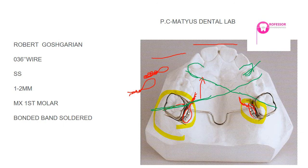According to Ricketts, if you draw a line from the cuspal tip of the distobuccal cusp and the mesiopalatal cusp, you get a straight line. When you extend this straight line anteriorly — with a ruler, not freehand — the free end of that line should lie on the distal half of the maxillary canine.